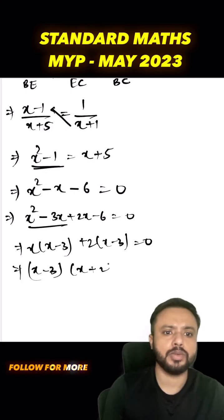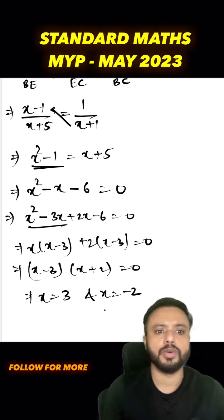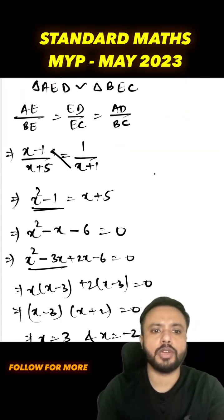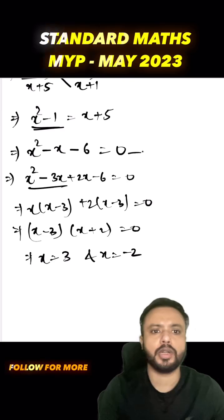Hence I can say that x will be equal to 3 and x will be equal to negative 2. We had to show x is equal to 3, which I already got. Here I have used splitting the middle term method; you can also use the quadratic formula to solve this.